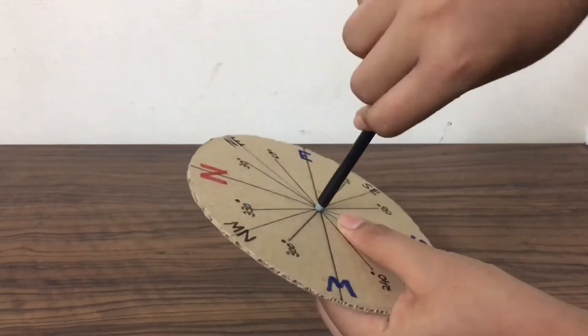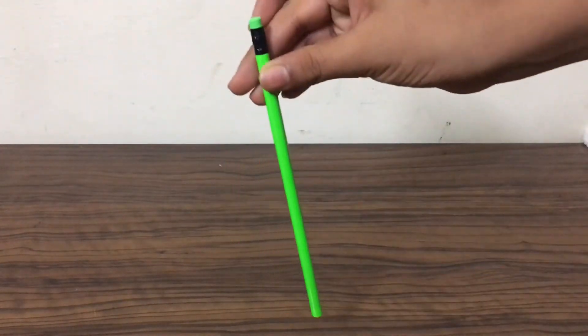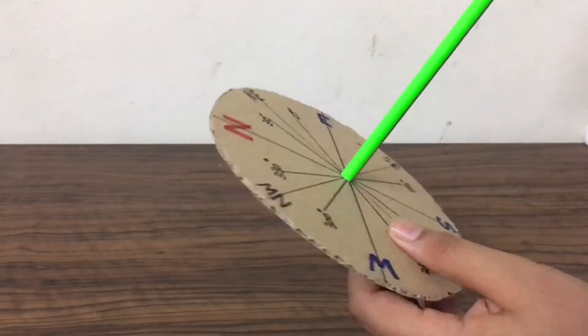Now back to our cardboard disc. Poke a hole through it the size of a pencil and insert a rubber tipped pencil into it.